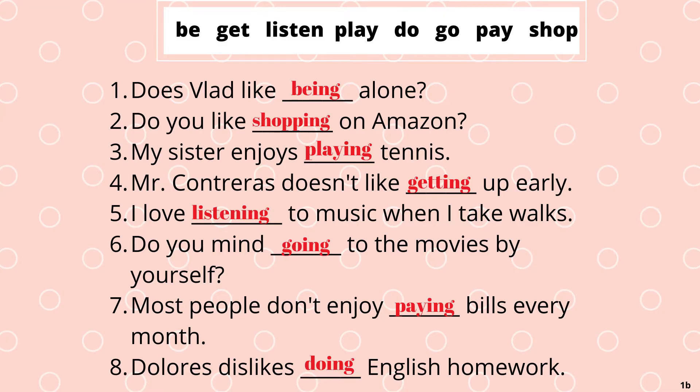Alright class, let's look at the answers and see how we did. Number one: Does Vlad like being alone? Number two: Do you like shopping on Amazon? Number three: My sister enjoys playing tennis. Number four: Mr. Contreras doesn't like getting up early. Number five: I love listening to music when I take walks. Number six: Do you mind going to the movies by yourself? Number seven: Most people don't enjoy paying bills every month. Number eight: Dolores dislikes doing English homework.